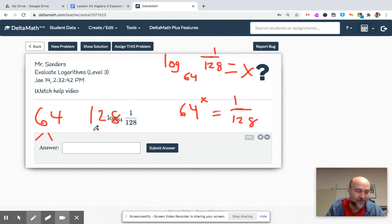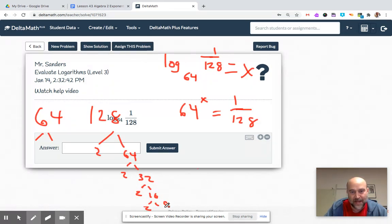128 divided by two. Two times 64, 64 is two times 32, two times 16, two times 8, two times 4, two times 2. One, two, three, four, five, six, seven. This is really two to the seventh.